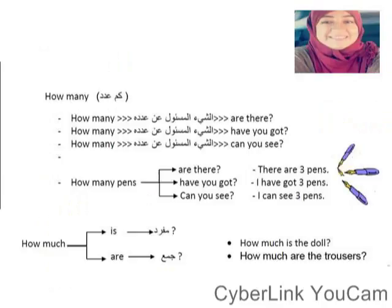تتشرف مع بعض الدرامر بيكلم عن how many و how much. نخب أن how many بسأل بيها على العدد. For example, How many are these? How many have you got? How many can you see? Or how many are there? There are three pens. How many pens have you got? I have got three pens. How many pens can you see? I can see three pens. How many بسأل بيها عن العدد، ودي عندك هنا ثلاث أمثلة للأسئلة عن how many.